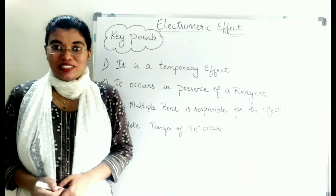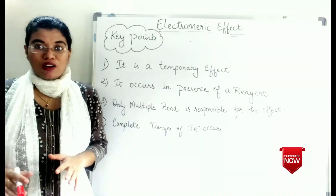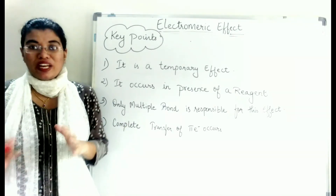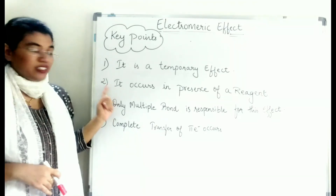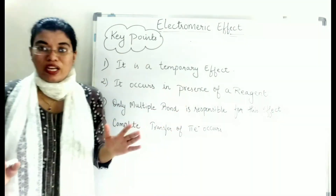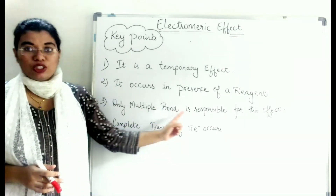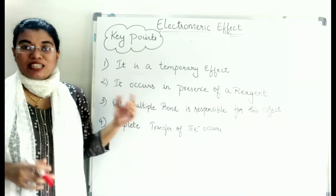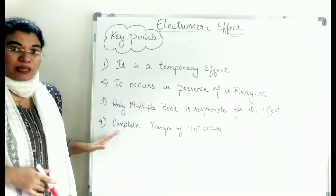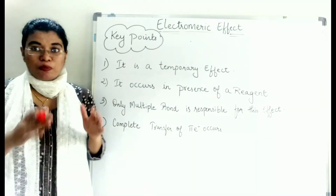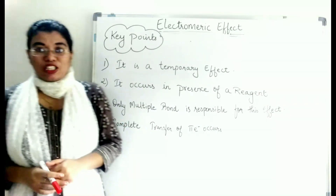Now let's look at a few important key points of the Electromeric effect. First, it is a temporary effect — it is not seen within a molecule by itself, but occurs whenever an attacking reagent is present. Second, it occurs only in the presence of a reagent. Third, only a multiple bond (double or triple bond) is responsible. Fourth, there is a complete transfer of pi electrons from the double or triple bond to any one of the atoms.